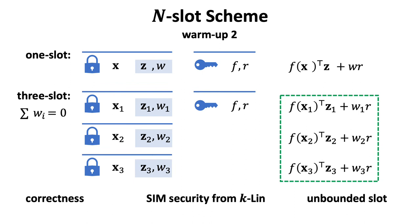To check the correctness, we know that the decryption works as in warm-up scheme 1. We use the secret key to decrypt each sub-ciphertext one by one and sum up all the partial decryption results. By the relation of wi, we can see that all wi will be cancelled out and the attribute weighted sum will be correctly revealed. Namely, warm-up scheme 2 is correct. Again, the scheme supports an unbounded number of slots for the same reason.